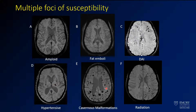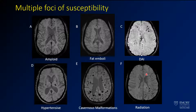For cavernous malformations, you can see they also have a diffuse distribution. One of the differences here is a greater variation in size — you see lesions that are larger — and you would also expect to see more characteristic findings on T1 and T2-weighted imaging. For radiation, the hemorrhages are predominantly confined to one side, as in a patient who had selective radiation to one side of the brain, possibly to treat a glioma or another tumor.